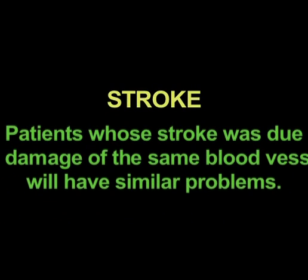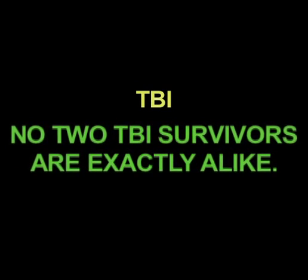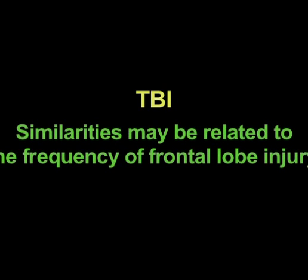In a stroke, patients whose stroke was due to the same blood vessel damage will have similar problems — those two patients will look very much alike. In brain injury, however, diffuse injuries vary greatly from one individual to the next, so no two traumatic brain injury survivors will be exactly alike. Some similarities may be related to the frequency of frontal lobe injuries, which happen quite a bit in car accidents, but the types of difficulties and effects seen after the injury may be very different, even when people have sustained a similar injury.